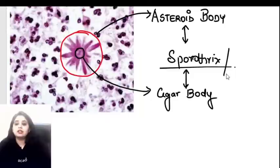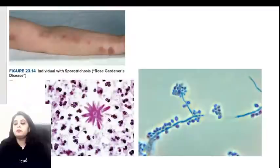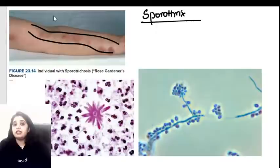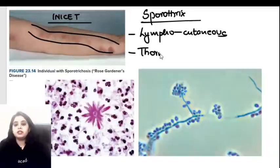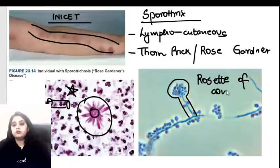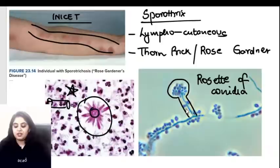The classical history given for Sporothrix is rose gardener's disease - someone getting a thorn prick from a rose. The lymphocutaneous spread is seen after a thorn prick in a person who handles roses and gardening. Microscopically it shows a star shape with a cigar body at the center, and on Lactophenol Cotton Blue it shows rosettes of conidia.